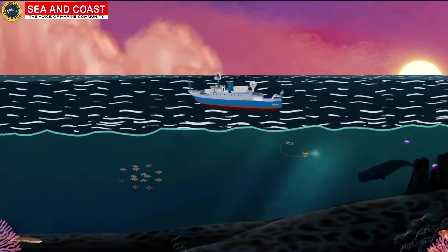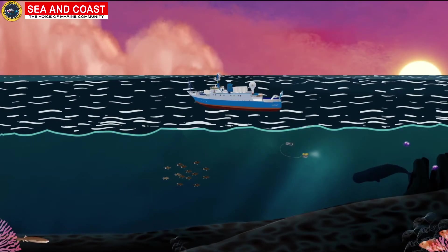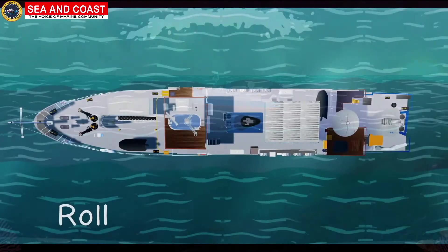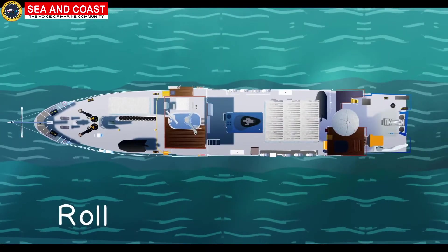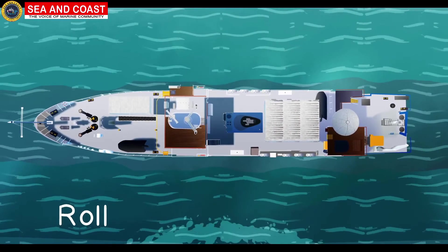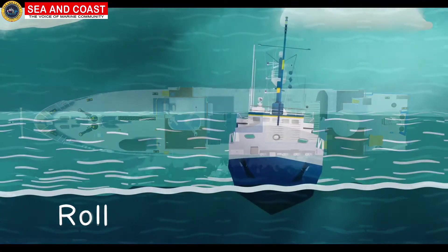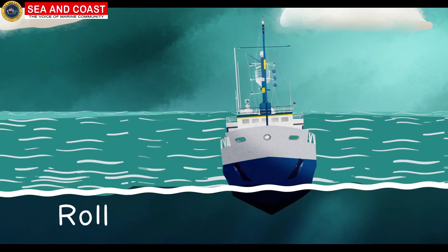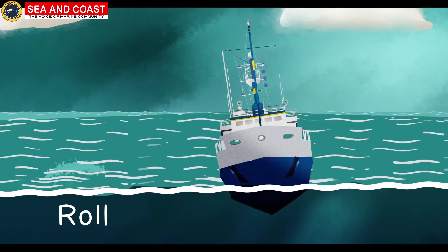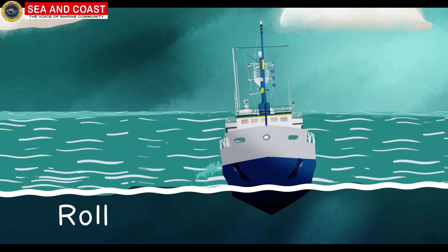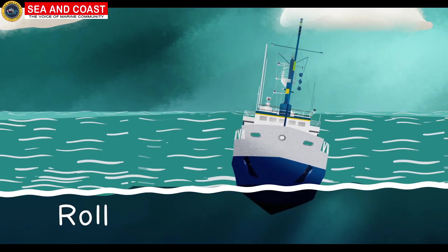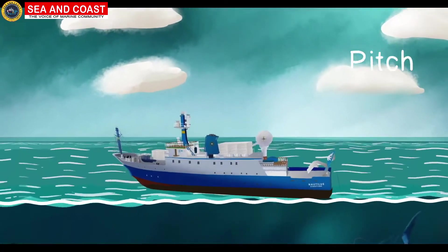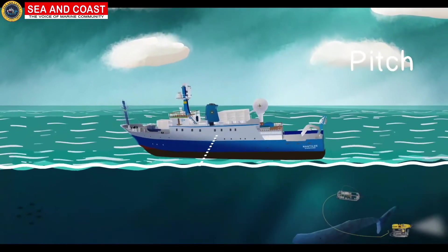Having discussed all the three types of transverse motions, we now come to the rotational type of motions. Where if the ship rotates about an imaginary line considered along its length, it is known as rolling, because if we look at the ship from its front, it looks like as if the ship is rolling over the waters. If the ship rotates about an axis along its width, it is known as pitching.